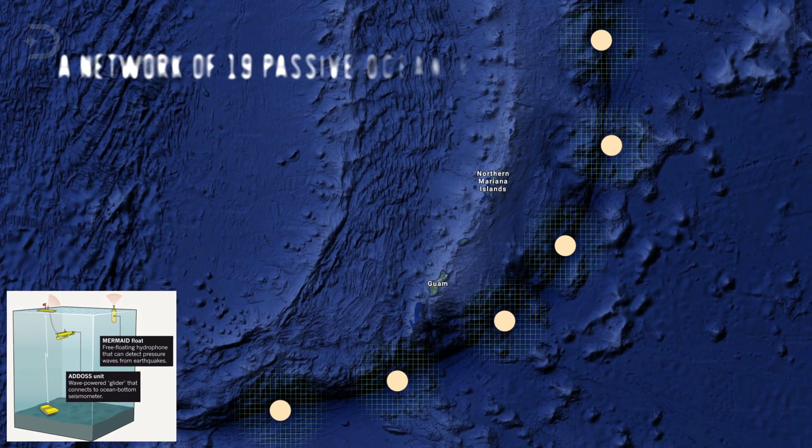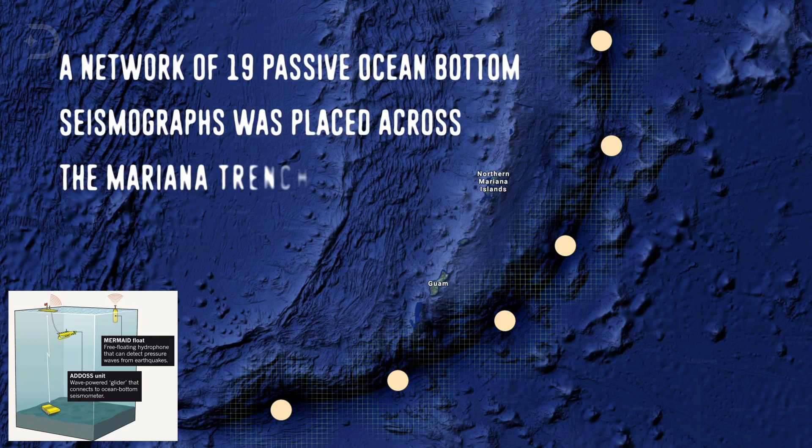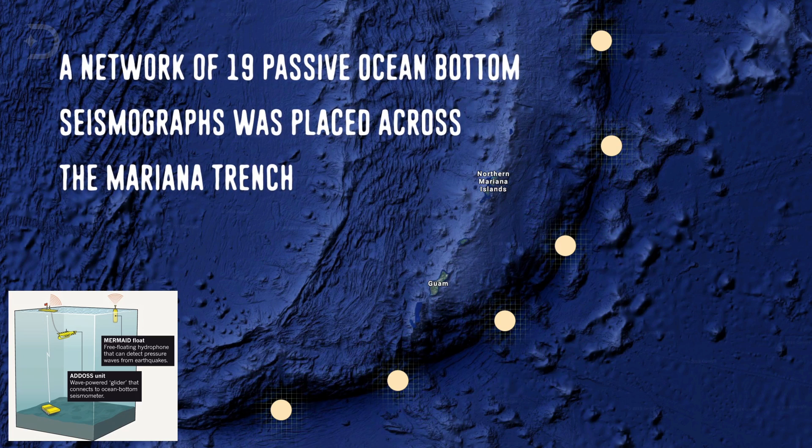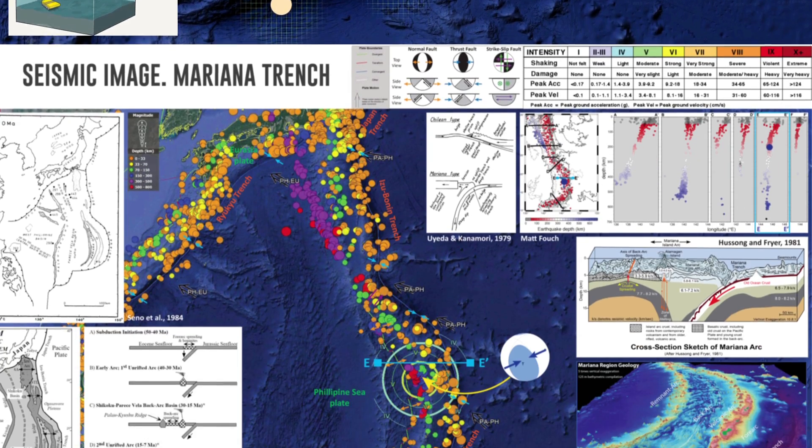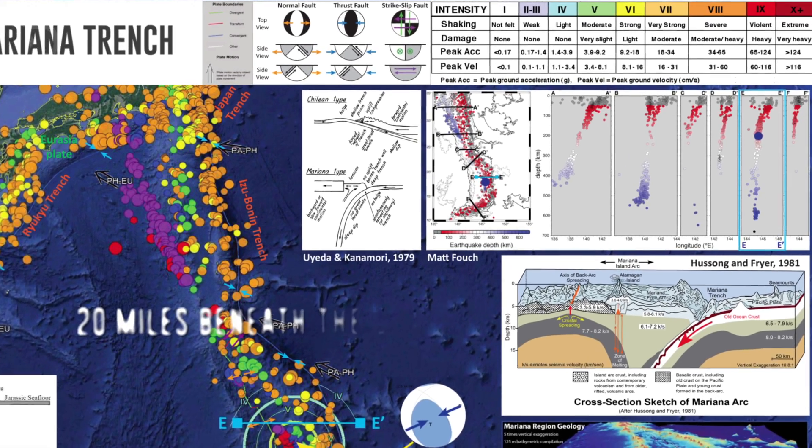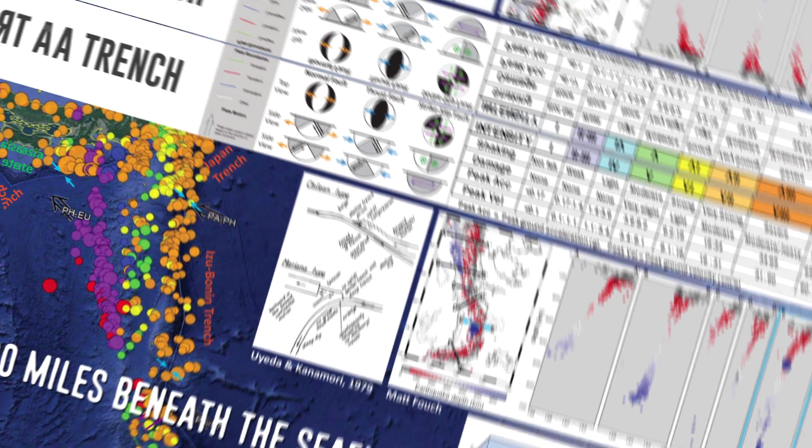A network of 19 passive ocean-bottom seismographs was placed across the Mariana Trench, and seven island-based seismographs were also used. The speed at which the seismic waves travel indicate how much water the rocks could hold. The seismic images obtained show that the area of hydrated rock at the Mariana Trench extends almost 20 miles beneath the seafloor, much further than previously known. Previous conventions were based on active source studies, which can only show the top three or four miles into the incoming plate.